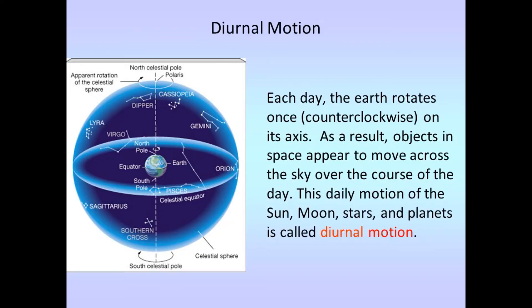First, we must be familiar with the term diurnal motion. Each day, the Earth rotates once counterclockwise on its axis. As a result, objects in space appear to move across the sky over the course of the day. And this daily motion of the Sun, Moon, Stars, and Planets, to our viewpoint, is called diurnal motion.